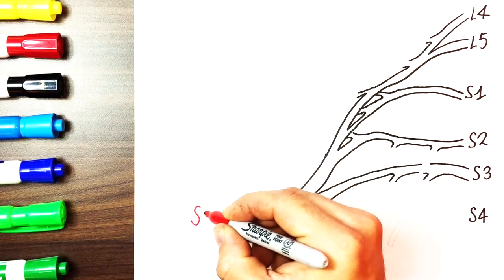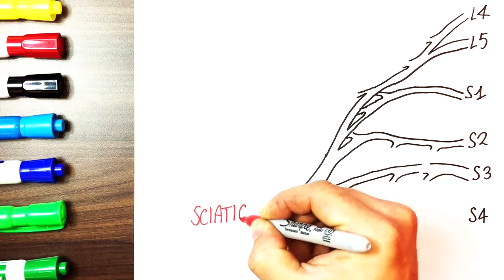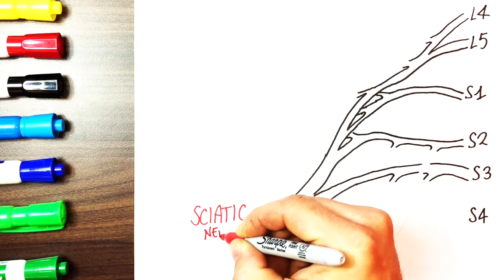First we label the spinal levels from L4 to S4, then we start drawing the main structure of the sacral plexus, the sciatic nerve.